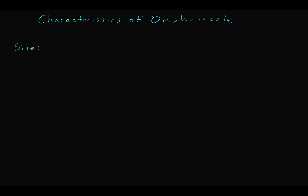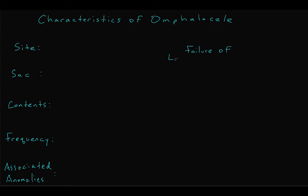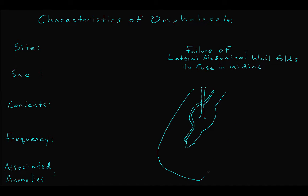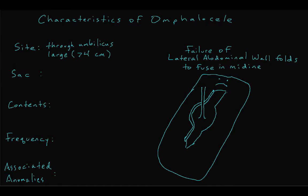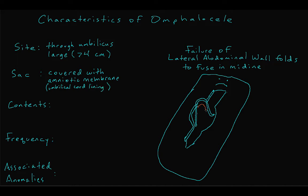Let's take a look at some of the characteristics of omphalocele in more detail. Omphalocele represents a failure of the lateral abdominal wall folds to meet in the midline, leading to a large — greater than four centimeters — defect through the umbilicus. As a result, the defect is covered with an amniotic membrane. The rectus muscles are present, but often insert far apart on the costal margins. Because the defect is large, it contains midgut as well as other intra-abdominal viscera, such as the liver or spleen. Omphalocele is the only congenital abdominal wall defect large enough where the liver may herniate through.